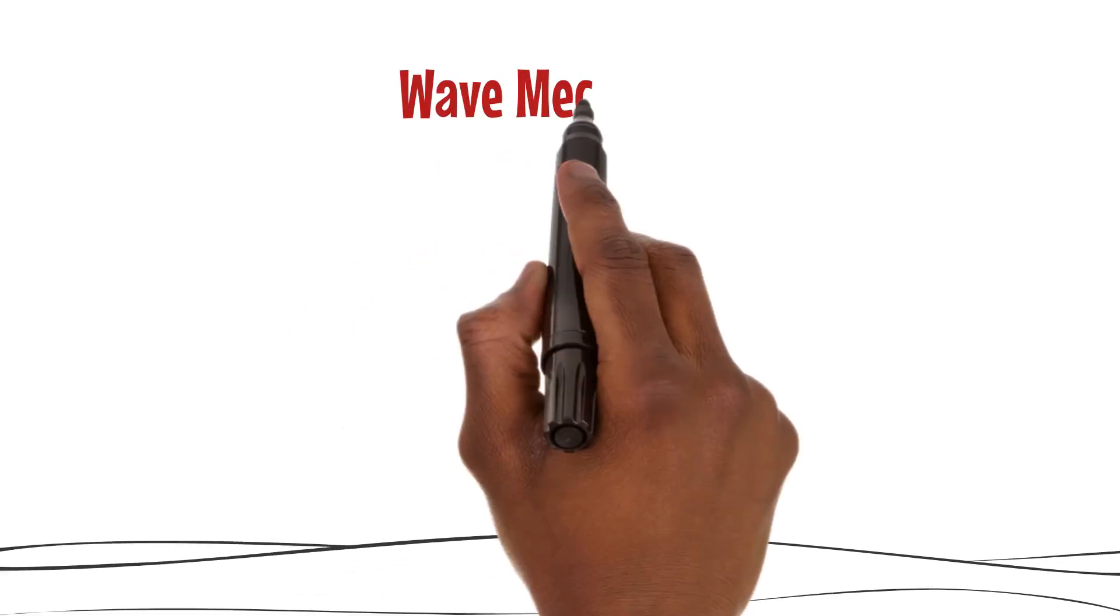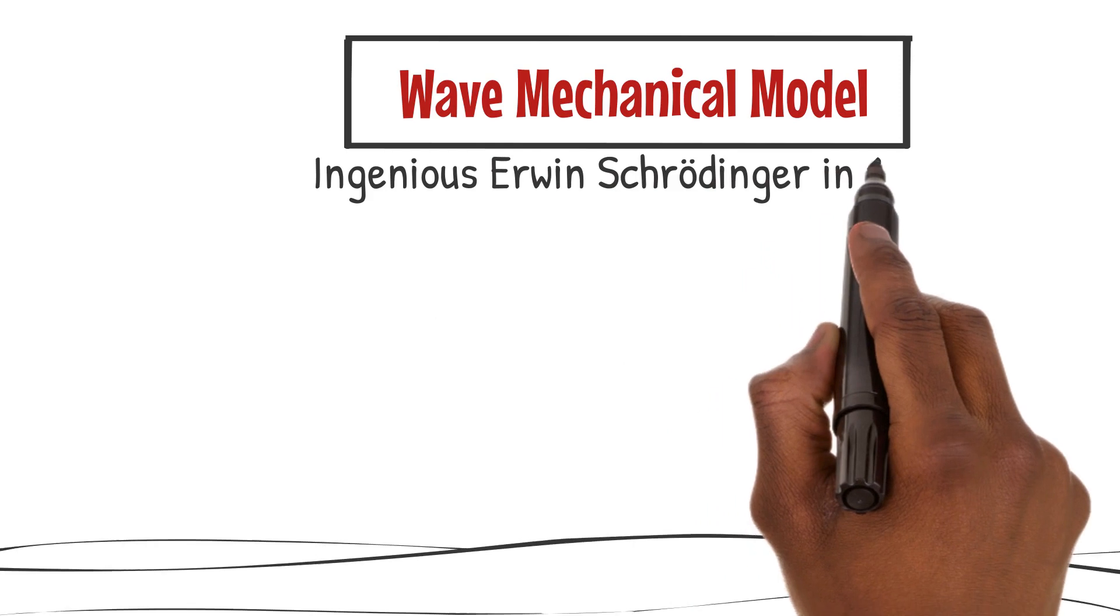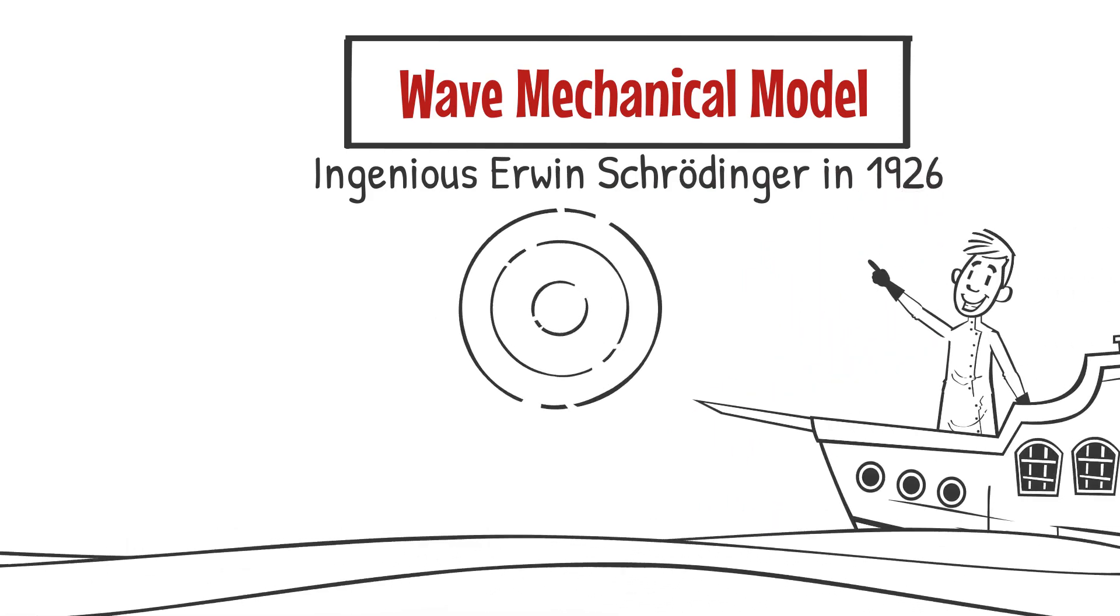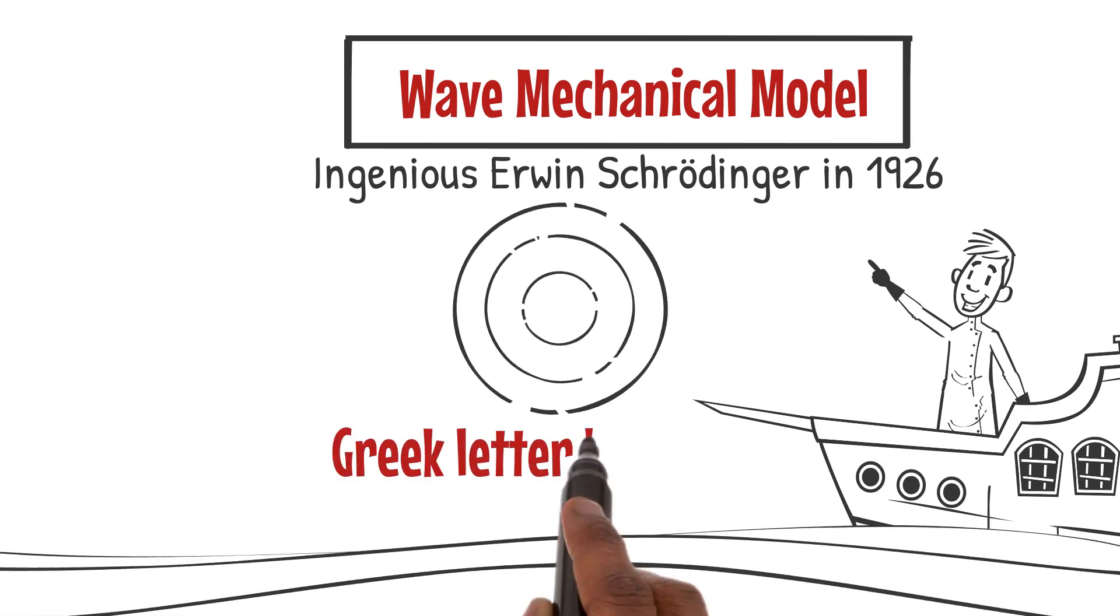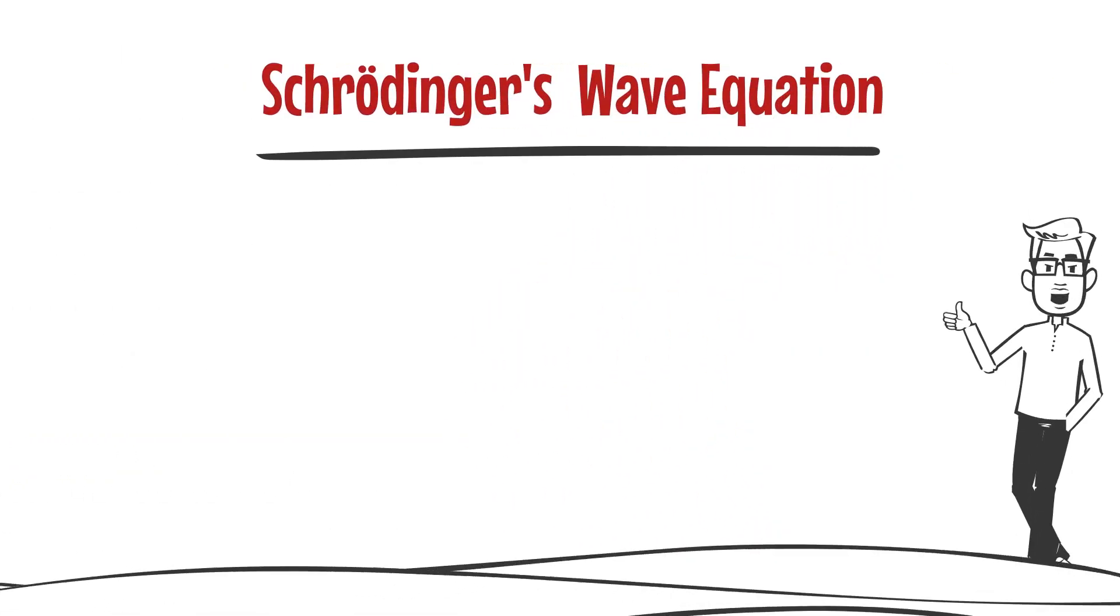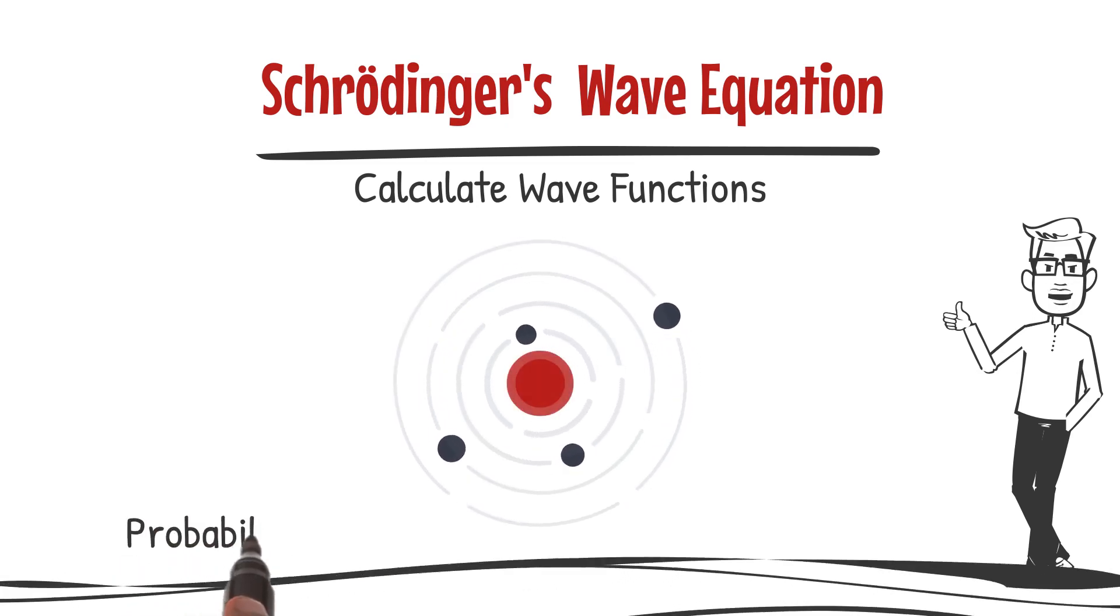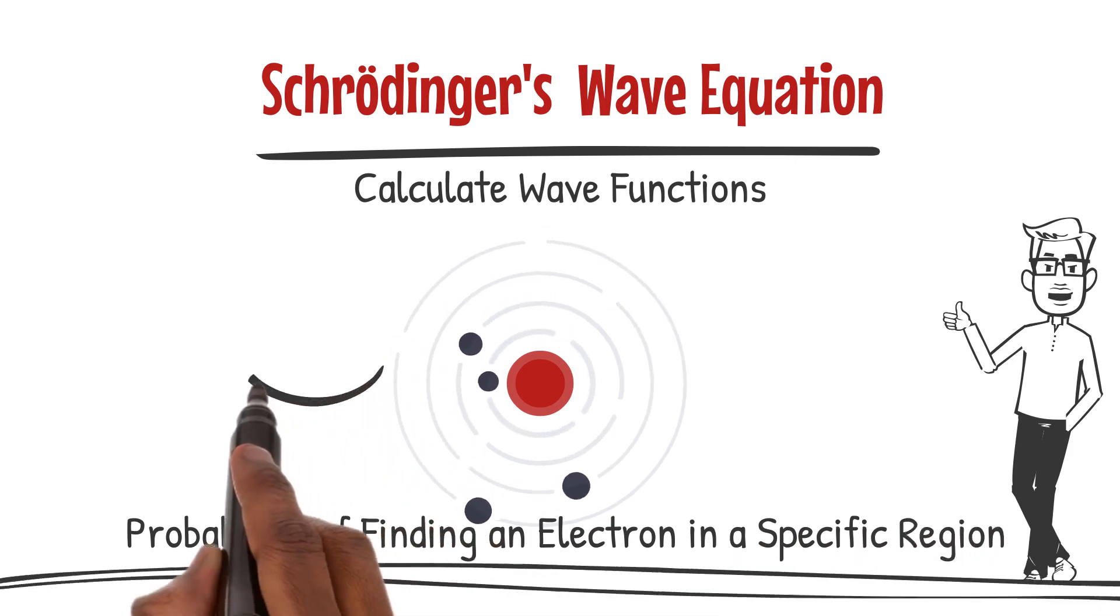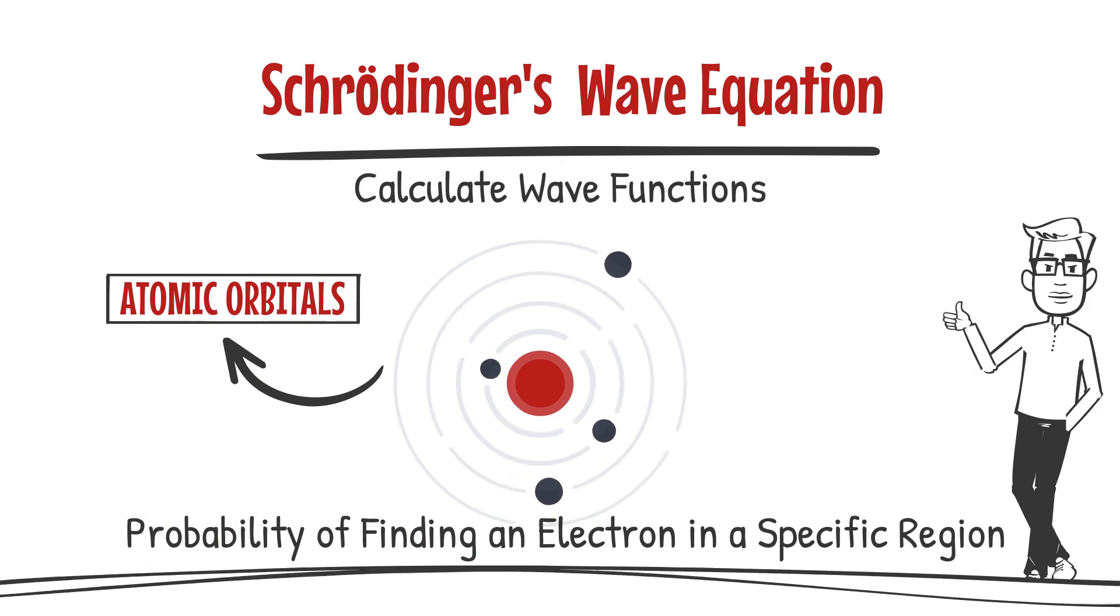The wave-mechanical model of the atom, proposed by the ingenious Erwin Schrödinger in 1926. This model takes a mathematical approach to describe the movement of electrons as wave functions, symbolized by the Greek letter psi. Schrödinger's wave equation allows us to calculate wave functions that provide information about the probability of finding an electron in a specific region around the nucleus. These regions are called atomic orbitals, and they exist in three-dimensional space.